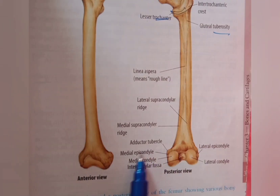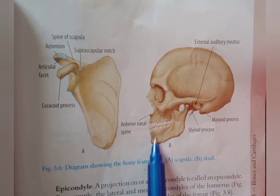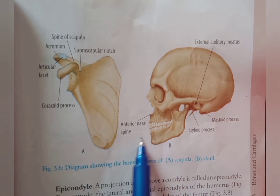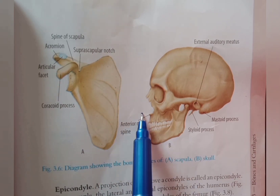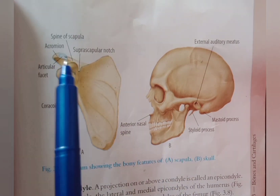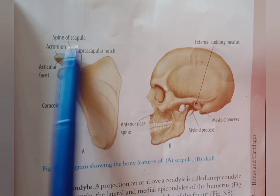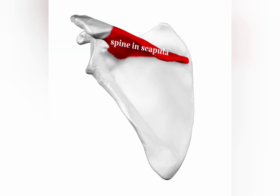Next, we have discussed the spine. We have seen the nasal spine — this is a pointed projection of the maxilla. And this is a plate-like projection of the scapula, also called the spine of the scapula.